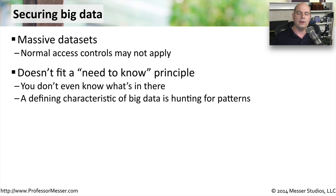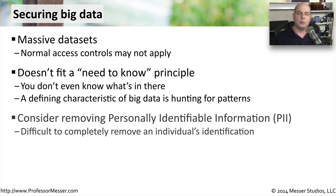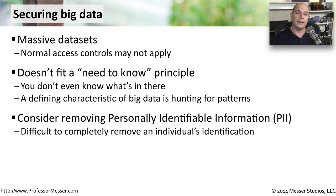The idea is hunting down patterns, and we don't know what patterns we're going to find until we go hunting for them. So it becomes difficult to qualify who gets access to the data and who doesn't. As we're pulling information from all of these diverse data sources into this big data repository, we may want to consider filtering out personally identifiable information, or PII — this might be a social security number, a telephone number, or anything that is personal data. If we can filter that out before putting it into the database, we can perhaps relax our security controls, because if somebody gained access to that big data, they still would not have access to any personal details.